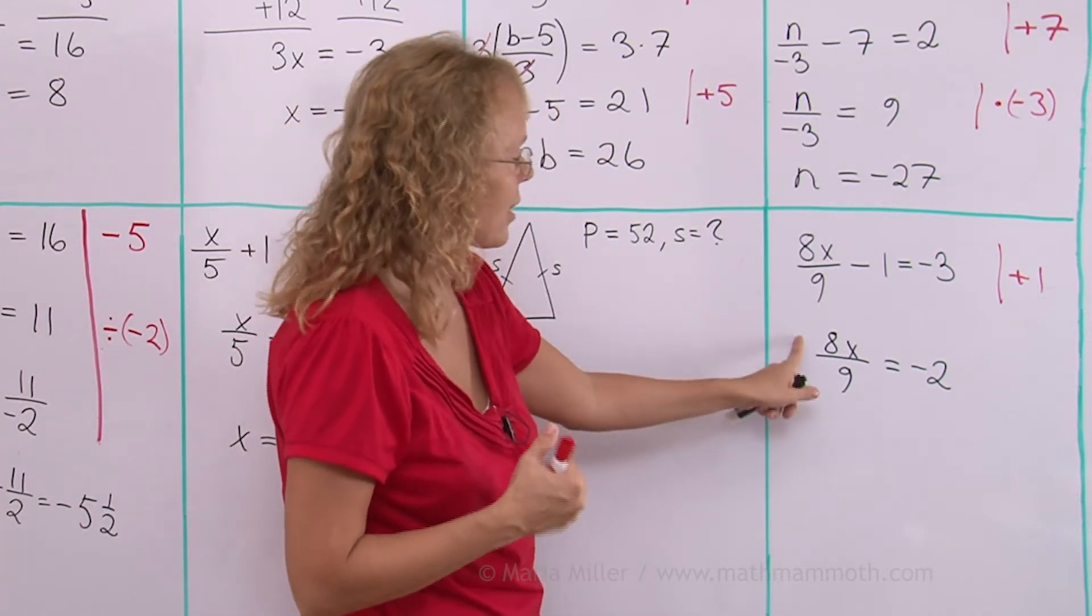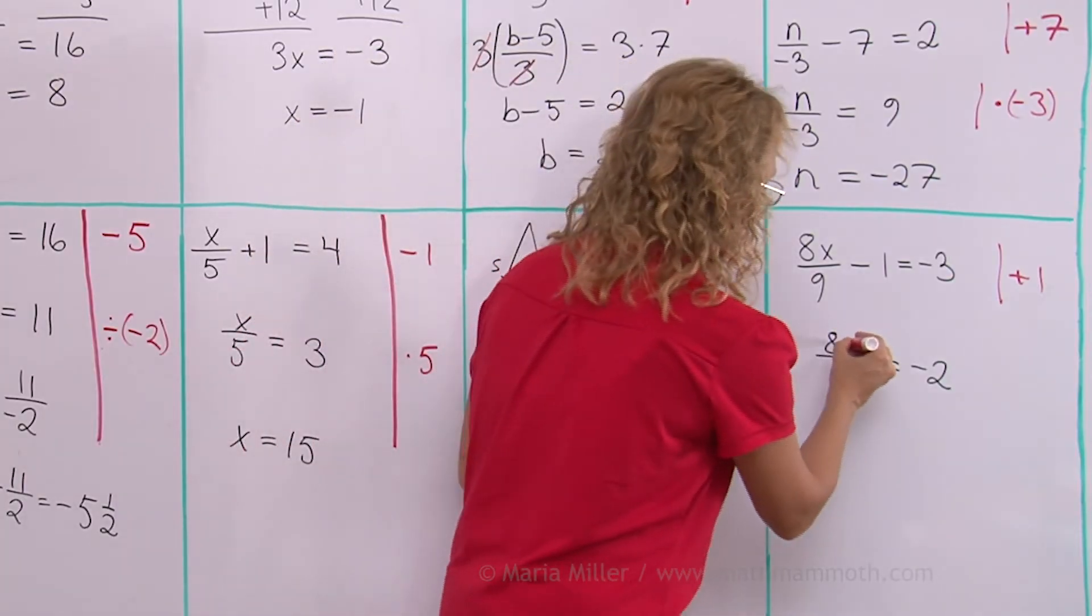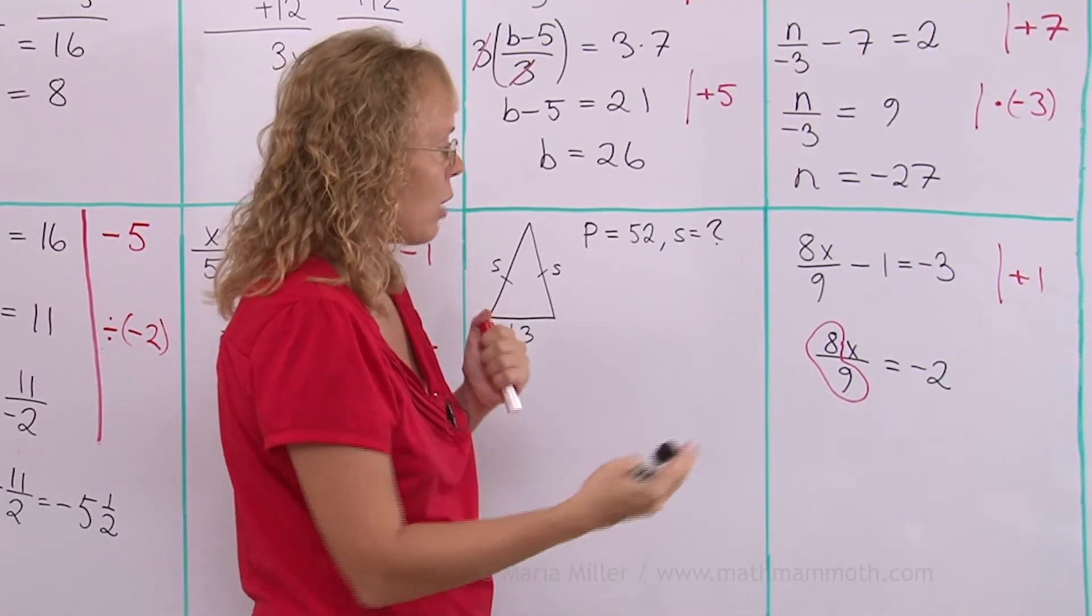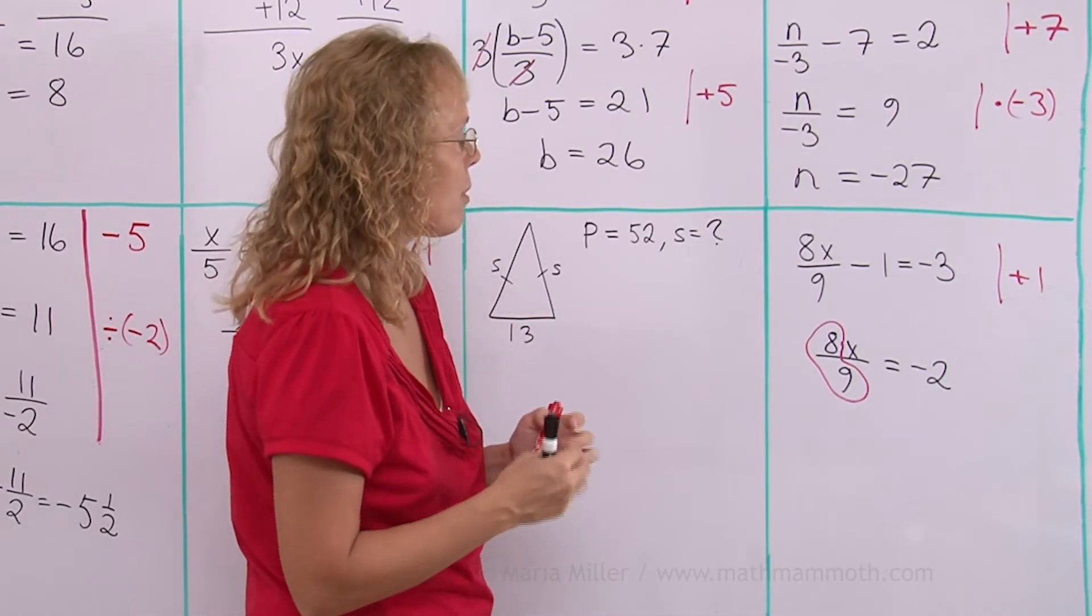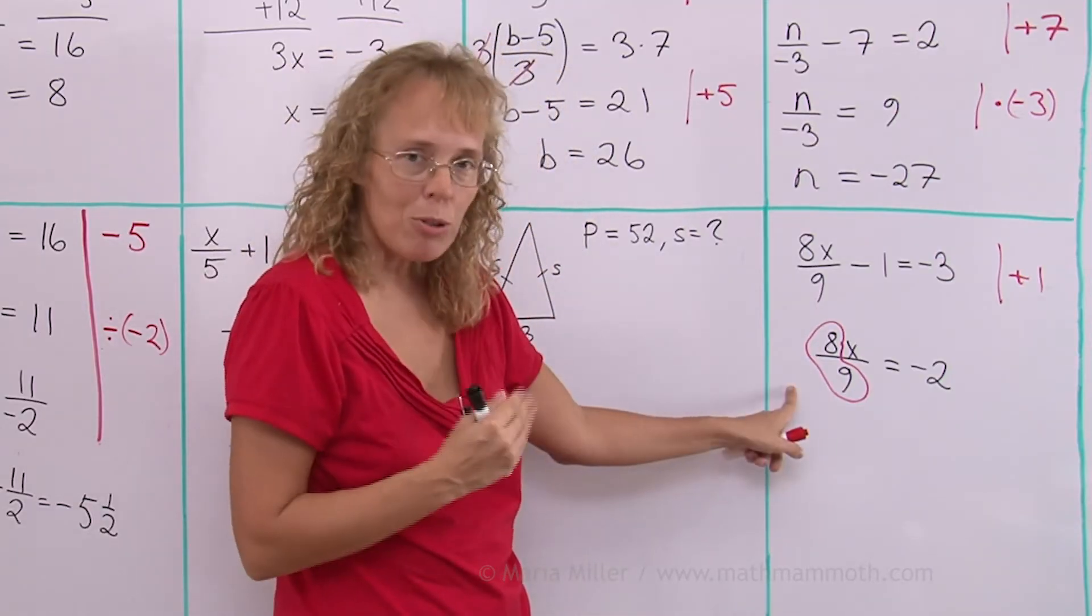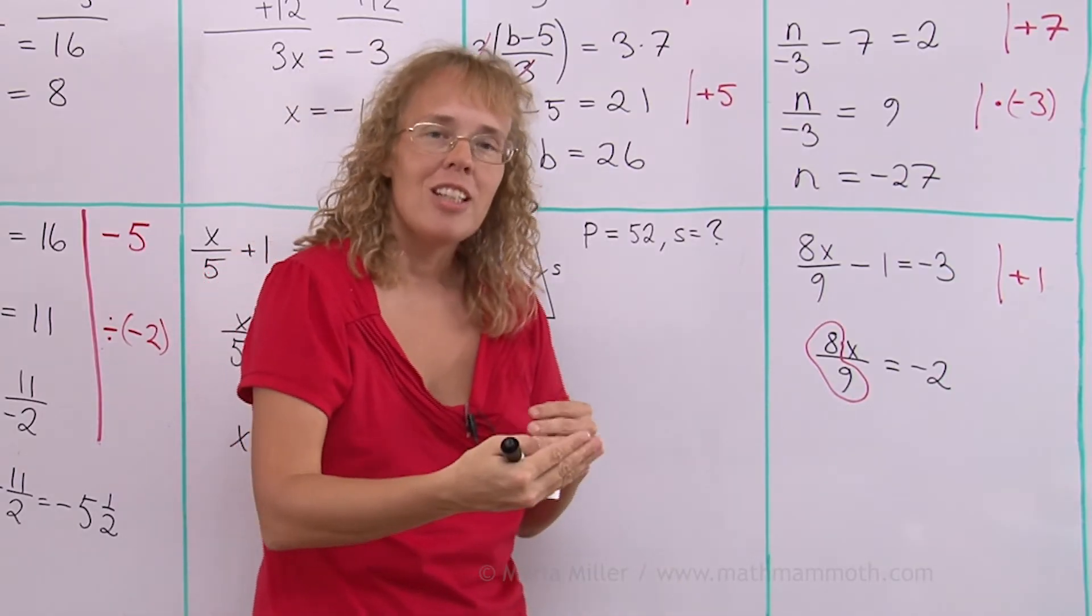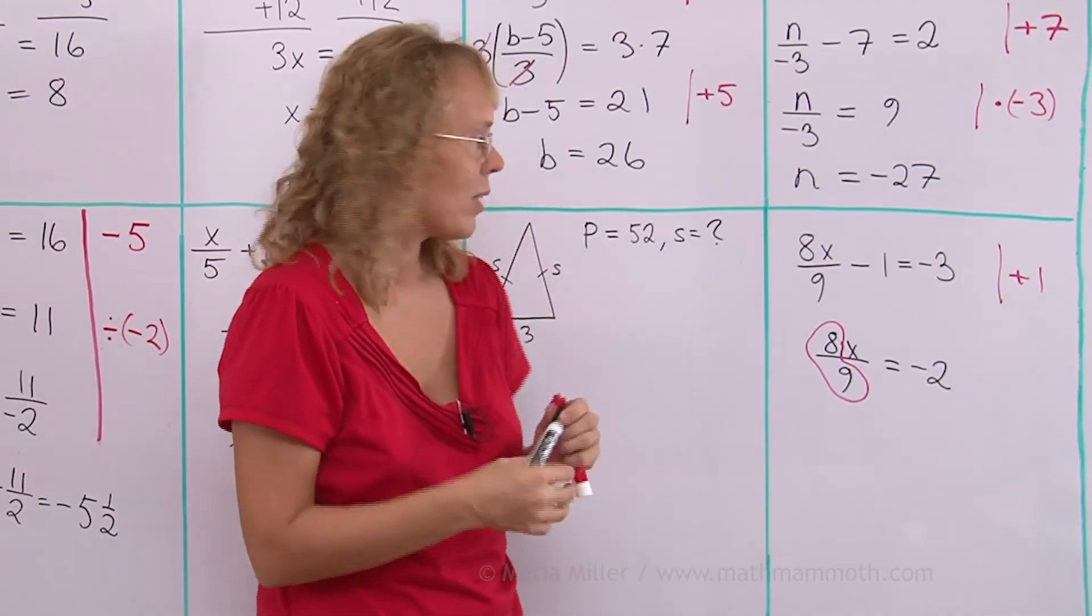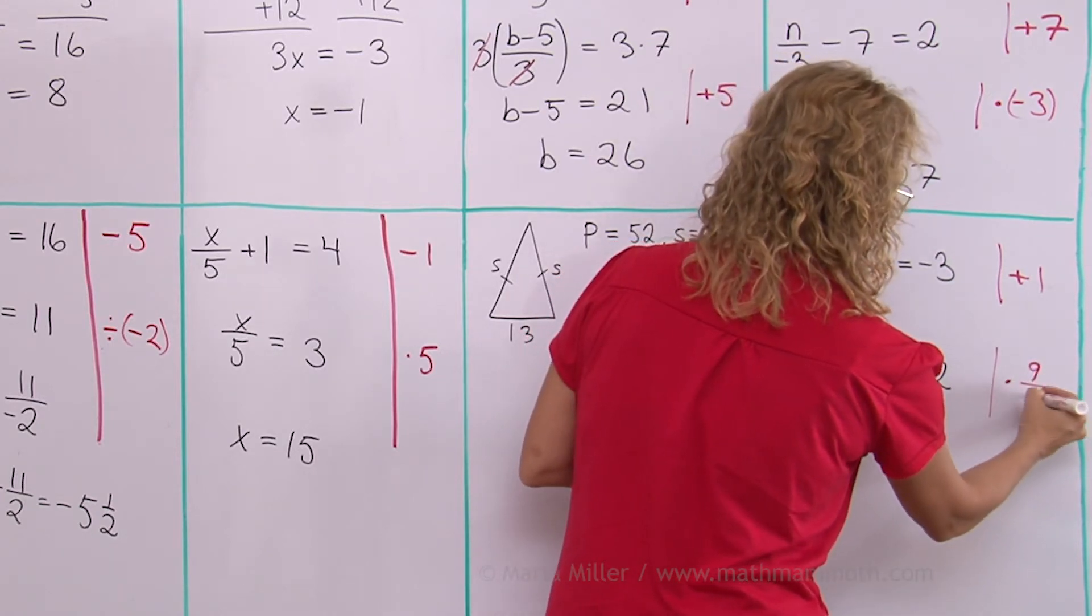We dealt with these when we had the lesson about multiplication and division equations. This is the same as 8 ninths times x. The fraction 8 ninths times x. Here it is, the fraction 8 ninths. And to undo that, I will multiply by its reciprocal. Technically it is a multiplication equation and so I can divide both sides by this fraction. But remember, when you divide by a fraction, the rule is to change that into a multiplication by the reciprocal. So that is why I'm gonna just straight on multiply by 9 over 8.